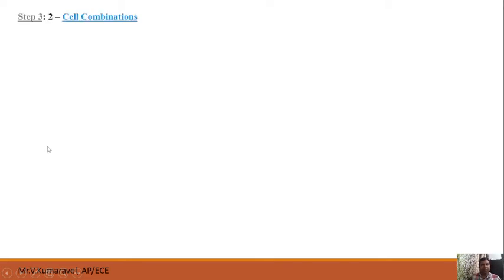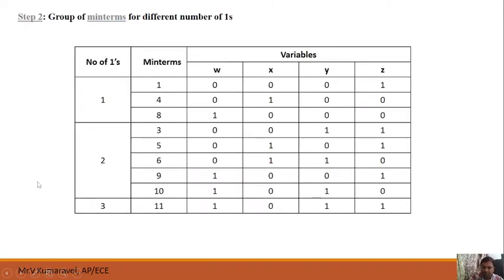Step 3 is 2-cell combination. We compare minterms from the group with 1 one against those with 2 ones. For example, consider minterm 1 (binary 0001) compared with minterm 3 (binary 0011). Checking bit by bit: the Y bit is deviating while the rest are the same — only 1 bit is deviating. Therefore, we can group 1 and 3 as a 2-cell combination.